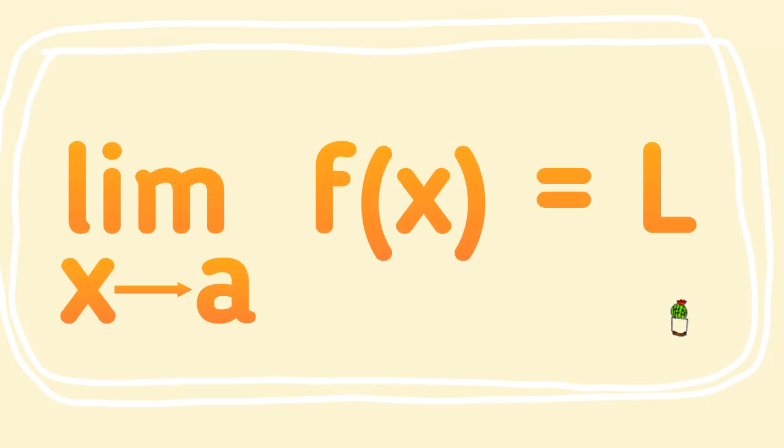The way that we look at this in general form is we write 'lim', which is short for limit, but underneath that we write x with a little arrow A of f of x equals L. The way that we read this out in full is: the limit as x tends to A of f of x is equal to some value L.